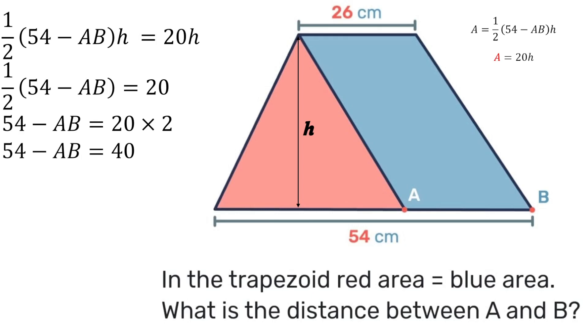Transposing we can basically switch the AB and the 40, so we'll have that 54 minus 40 is equal to AB, which leaves us with our answer that AB is 14.